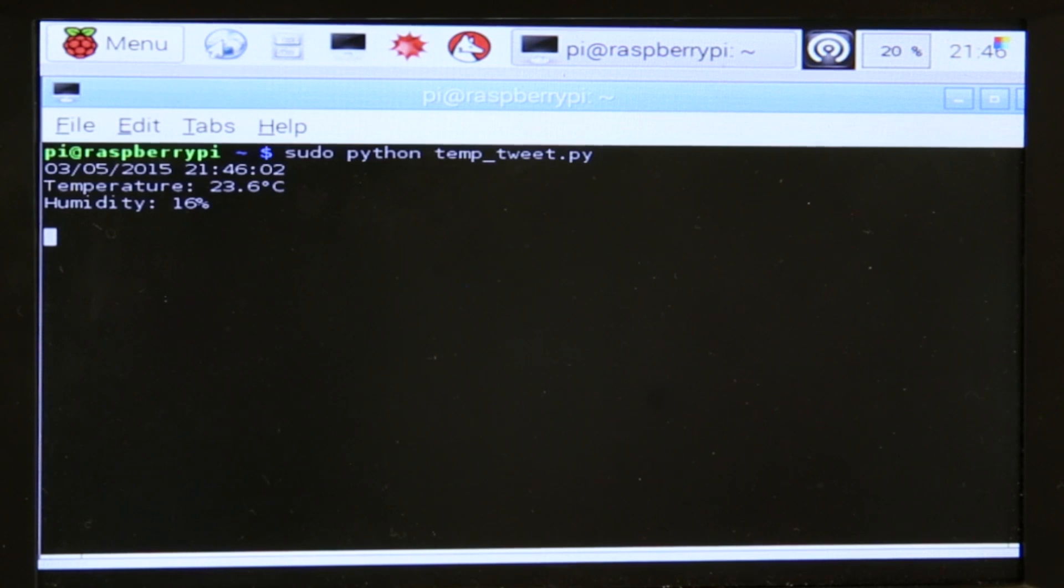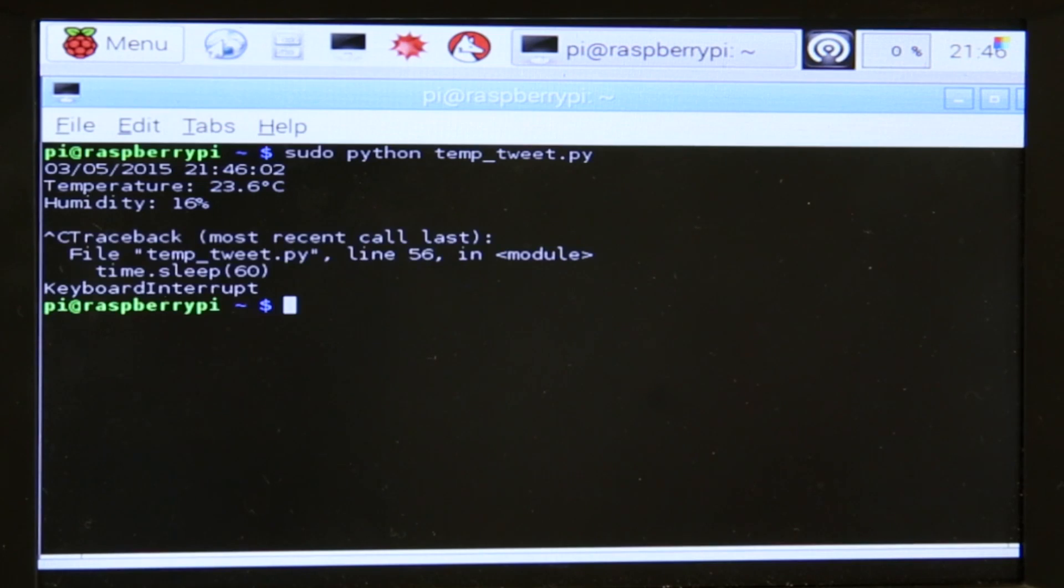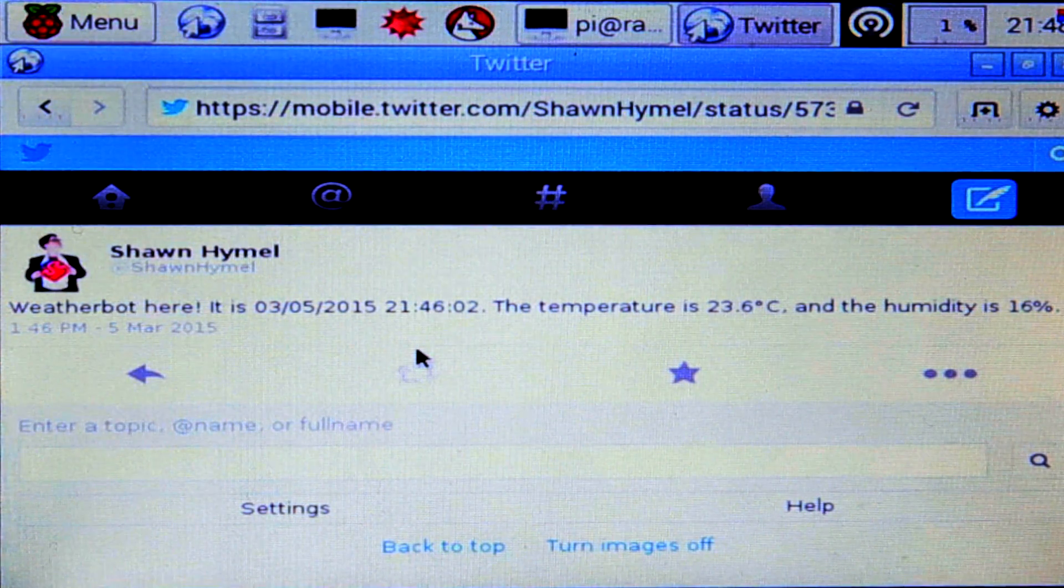Here, we have the working temperature monitor that then tweets from the Raspberry Pi. And if we go to my Twitter page, you can see that it's been posted.